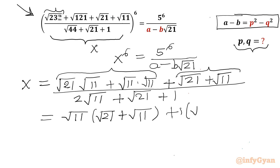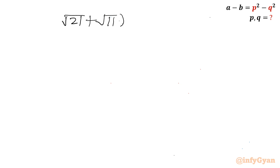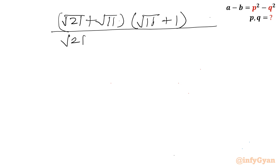So I can write root 11 common in bracket: root 21 plus root 11, then 1 is common giving root 21 plus root 11. I will write root 21, then split root 11 as root 11 plus root 11 plus 1. This is our x. Now I will take root 21 plus root 11 common, getting root 21 plus root 11 in the other bracket with root 11 plus 1, divided by root 21 plus root 11 plus root 11 plus 1.